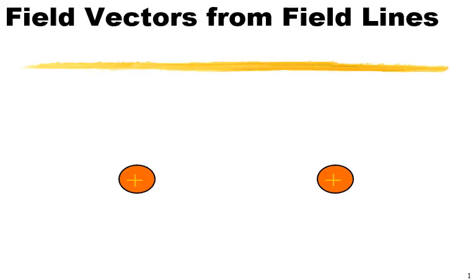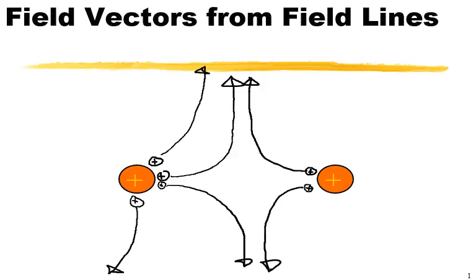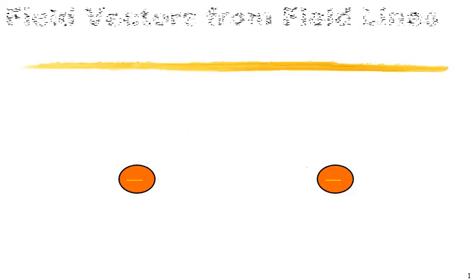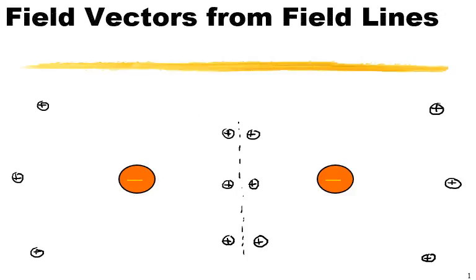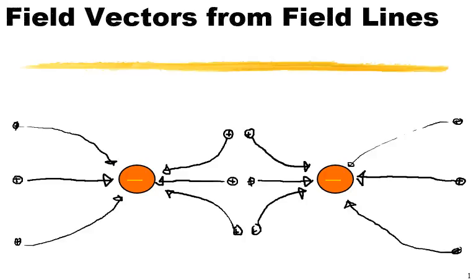Let's try this one — place some charges around and draw the field. Pause the clip and give this a try. This one swings up and around, this one's coming up and around, this one goes up and around. And finally, let's place test charges around two negatively charged spheres and draw what the field looks like. Those will come straight in, those will go straight in, those will come around, and they'll all come in from the outside.